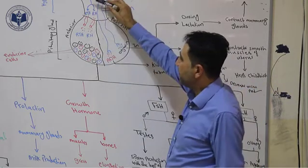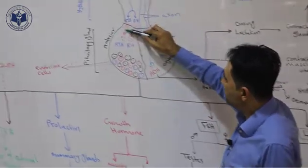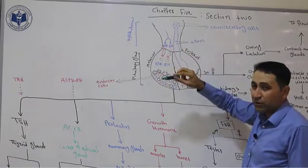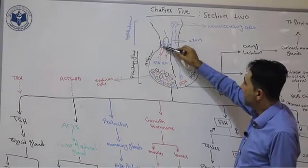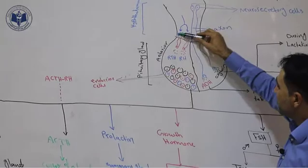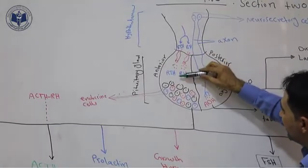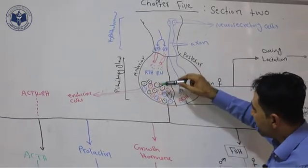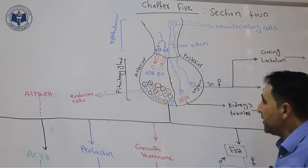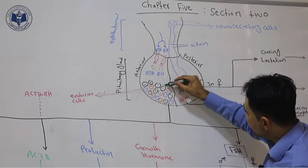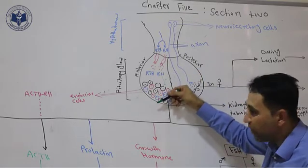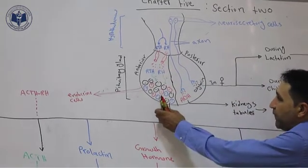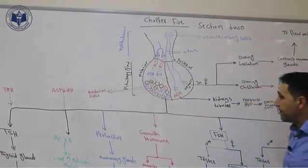The relationship between the hypothalamus and the anterior lobe of the pituitary gland is through a network of blood vessels. The hypothalamus produces two groups of hormones called releasing hormones (RH) and releasing inhibiting hormones (RIH). These are transported to the anterior lobe via blood vessels. Releasing hormones stimulate anterior lobe endocrine cells to produce hormones, while releasing inhibiting hormones stop their production.